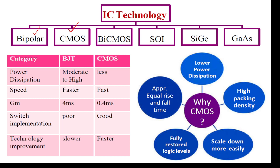Why are we going for CMOS and VLSI? Because CMOS technology has low power dissipation, and packing density is easy compared to bipolar technology. The main advantage is that you can easily pack components when designing any chip. It is also easy to scale down — if you want to reduce the size of the transistors, the chip, or any IC, it is very flexible compared to bipolar technology.